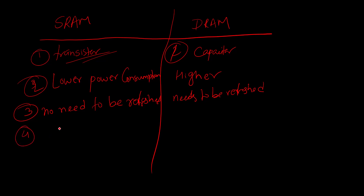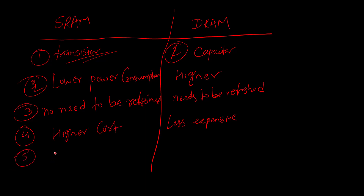DRAM has a higher storage capacity but is slower and less expensive compared to SRAM. SRAM has higher cost compared to DRAM. SRAM is very fast compared to DRAM, while DRAM is slower compared to SRAM. Secondary memory is even slower than both.